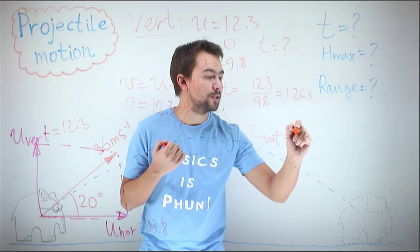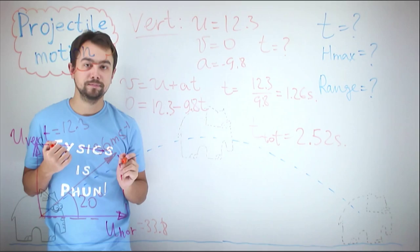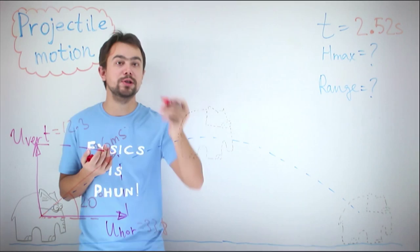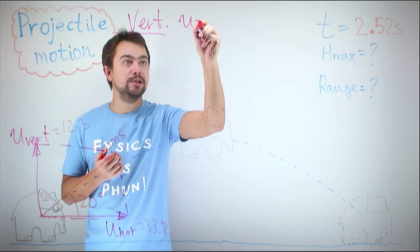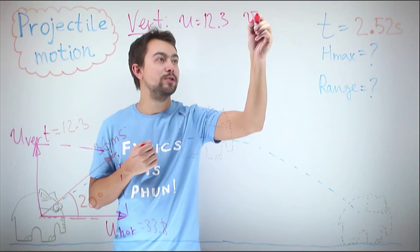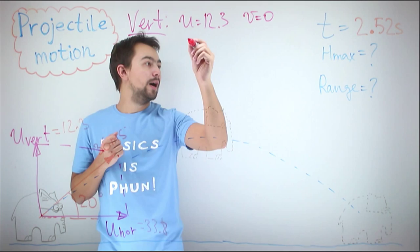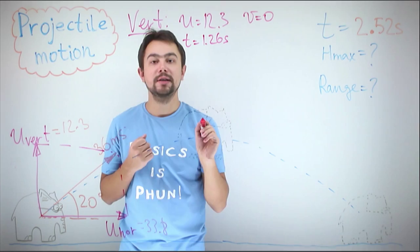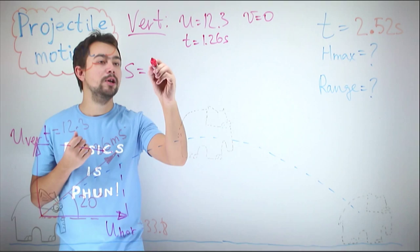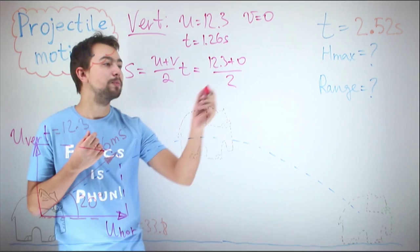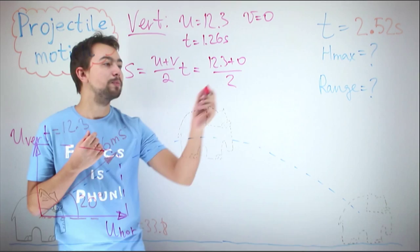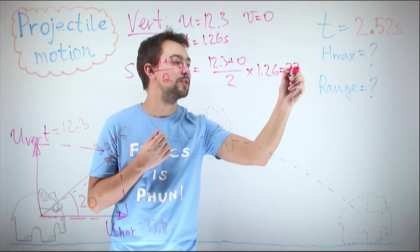To find the maximum height of the elephant, we again consider the vertical motion. Initial velocity is 12.3 meters per second, final velocity is zero, and time is 1.26 seconds. Using s equals (u plus v) divided by 2, multiplied by t: that's (12.3 plus 0) divided by 2, times 1.26, which gives 7.75 meters. This is the maximum height of elevation for the elephant.